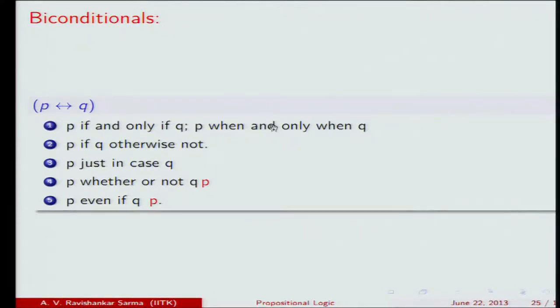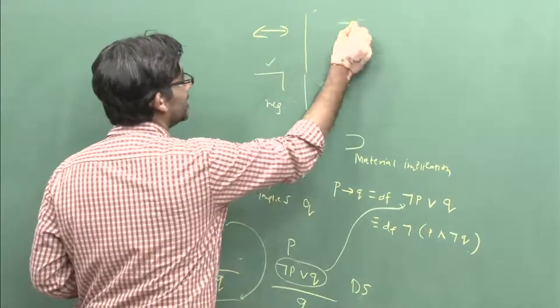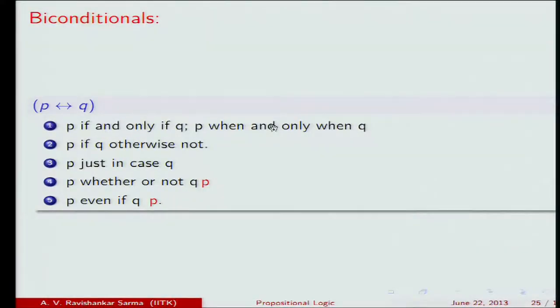The biconditional 'P if and only if Q' is commonly used in natural sciences to express necessary and sufficient conditions, or to assert logical identity between two things. It is written as P↔Q. Phrases like 'P if Q otherwise not,' 'P just in case Q,' 'P whether or not Q,' and 'P even if Q' all translate to P↔Q.